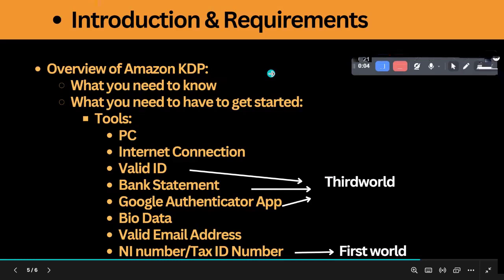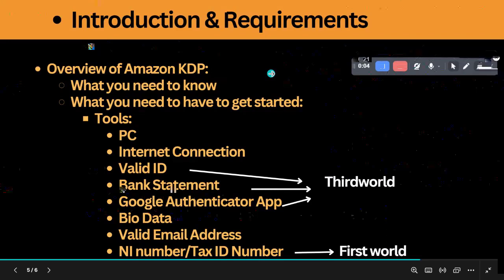Another thing to know about Amazon KDP is that it is not a get-rich-quick scheme, nor does it guarantee any sort of returns or rewards. Taking this course does not automatically translate into earnings — there are people who have been publishing on Amazon for years and have never made significant income. Many courses are sold by people without expertise, pushing the idea that Amazon publishing can make you rich overnight.